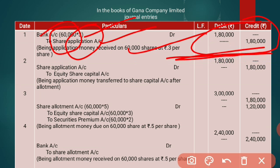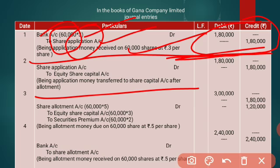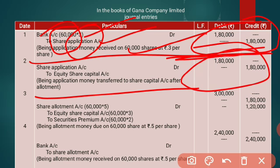The second journal entry is transferring the share application money to share capital. Individual shareholders paid in the first installment and it is transferred to the share capital account. The entry is: Share Application Account Dr to Equity Share Capital Account. The same 1,80,000 rupees will be transferred. This completes the application stage.